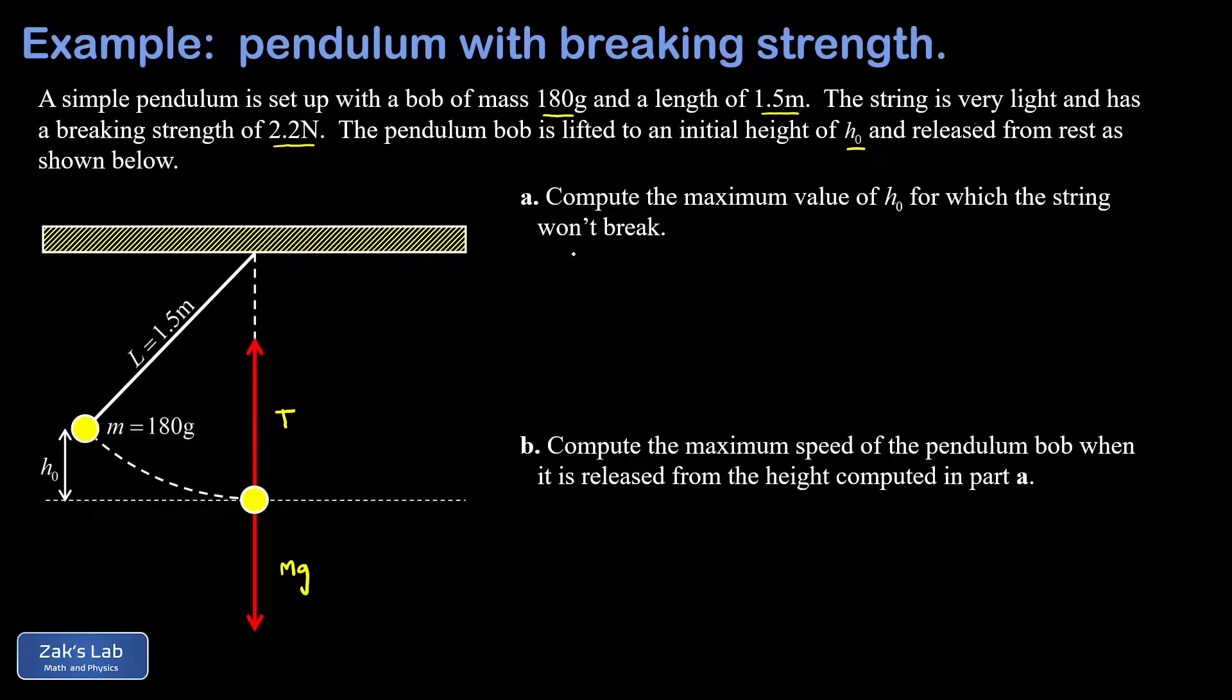So we apply Newton's second law to the pendulum bob, and that's f net equals ma. And we're going to use a coordinate system in which upward is positive. So t counts as positive, then I have t minus mg. mg counts as negative because it points downward. And that's equal to the mass of the pendulum bob times its acceleration.